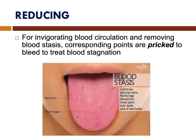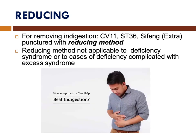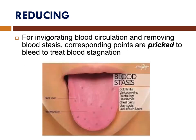The reducing method is used for invigorating blood circulation and removing blood stasis. Corresponding points are pricked to bleed to treat blood stagnation. Among the signs of blood stagnation are cold limbs, varicose veins, painful legs, headaches, chest pains, liver spots, lack of skin luster, and a purple tongue with dark spots.